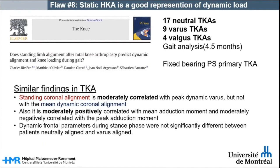Rivian et al. prospectively studied 35 primary posterior-stabilized cemented total knee arthroplasties, radiographically classified as neutrally, varus, or valgus aligned. Using motion-captured gait analysis, they found no significant correlation between the static hip-knee angle and the dynamic hip angle during stance phase. They found the static hip-knee angle to have only a moderate correlation with mean and peak adduction moments and concluded that the standing hip-knee angle after total knee arthroplasty was of little value to predict dynamic behavior of the limb during gait, possibly explaining why static hip-knee angles have limited influence on long-term implant fixation and wear.